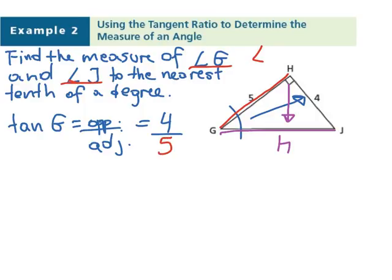So tan of G is 4 over 5. This doesn't tell us the angle. It's not even angles at all. It's just a ratio. What we need to find is the angle, and the tan of G will be used to find our angle.